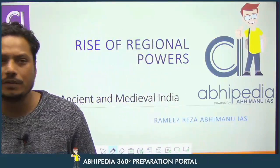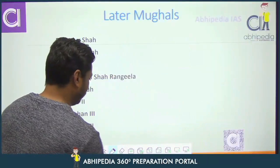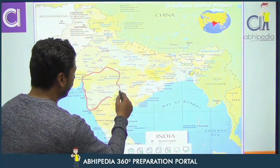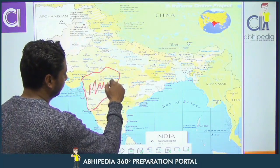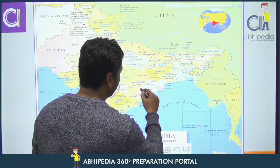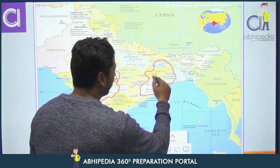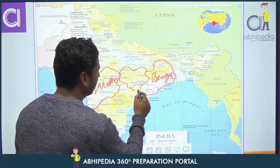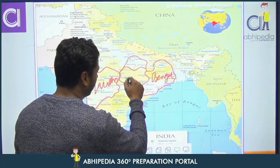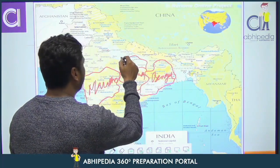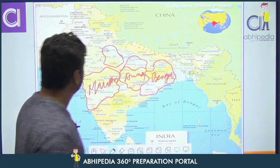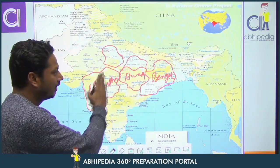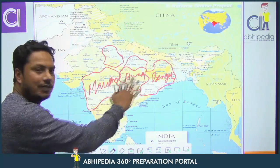We have seen the Marathas, the Bengal province — basically the Subah — and Awad. These three we have seen, and how their principalities have been established.